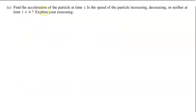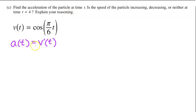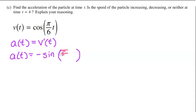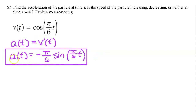Part C: Find the acceleration of the particle at time t. The acceleration function equals the derivative of the velocity function. To find the derivative of cosine of pi over 6t, we use the chain rule. The derivative of the outer function cosine is negative sine, and we multiply by the derivative of the inner function pi over 6t, which is pi over 6. Putting pi over 6 in front, we have a of t equals negative pi over 6 times sine of pi over 6t.